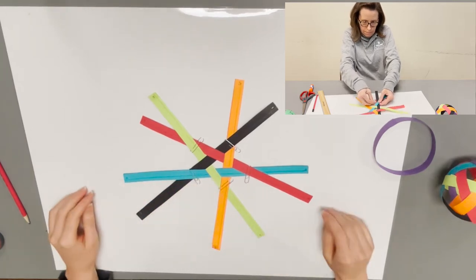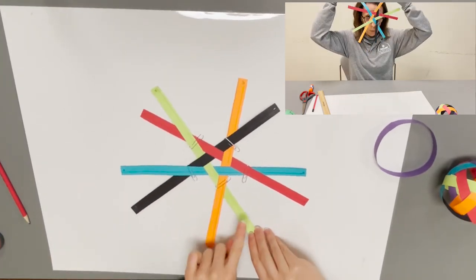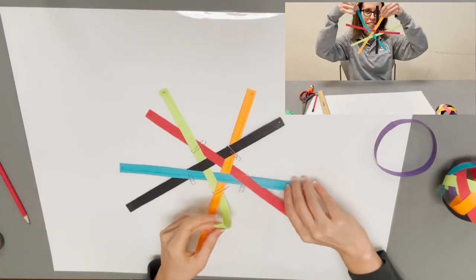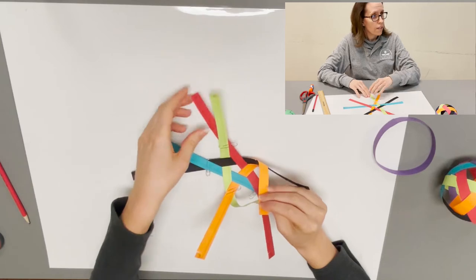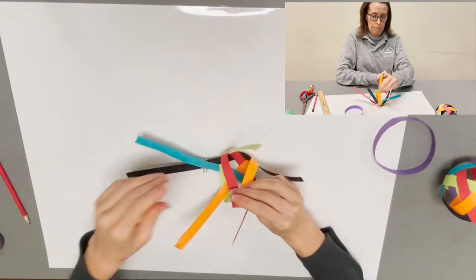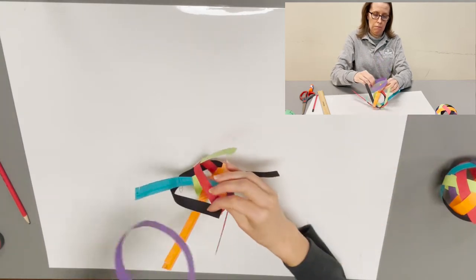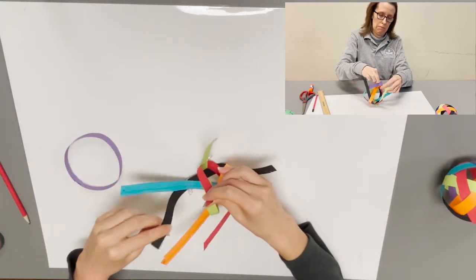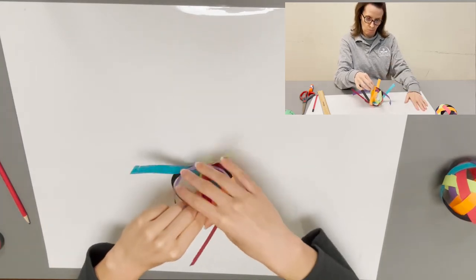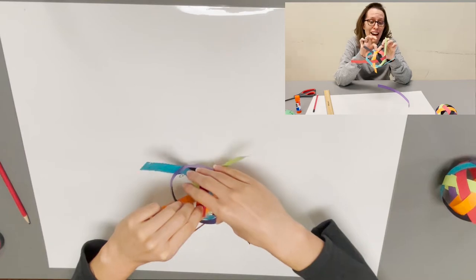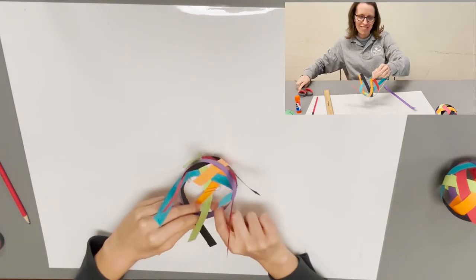The next step is you're going to pick up each of the ends that's on the bottom, so it would be the green right here, the teal, orange, red, and the black from over here. You take the purple one we put together earlier and put that over all the pieces.